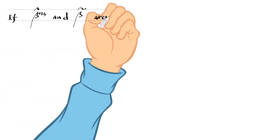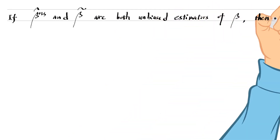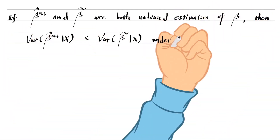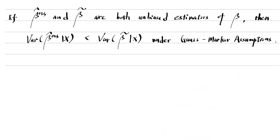Suppose beta hat and beta tilde are both linear unbiased estimators of the population coefficient beta. Under the five Gauss-Markov assumptions, the variance of the OLS estimator beta hat is smaller than the other estimator beta tilde. That is to say, beta hat is more precise than beta tilde. The Gauss-Markov theorem justifies using OLS to estimate the population coefficients because the OLS estimators are unbiased and most efficient, or the best among all the estimators under the five Gauss-Markov assumptions.